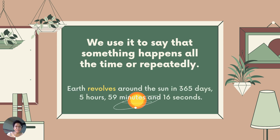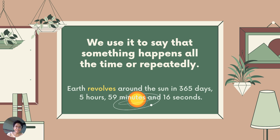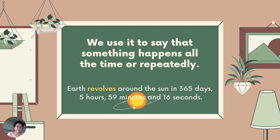We use the simple present to say that something happens all the time or repeatedly. For example: the earth revolves around the sun in 365 days, 5 hours, 59 minutes, and 16 seconds. It revolves continuously — it happens all the time or repeatedly. So we use the word 'revolve' here in the present simple aspect of the verb.